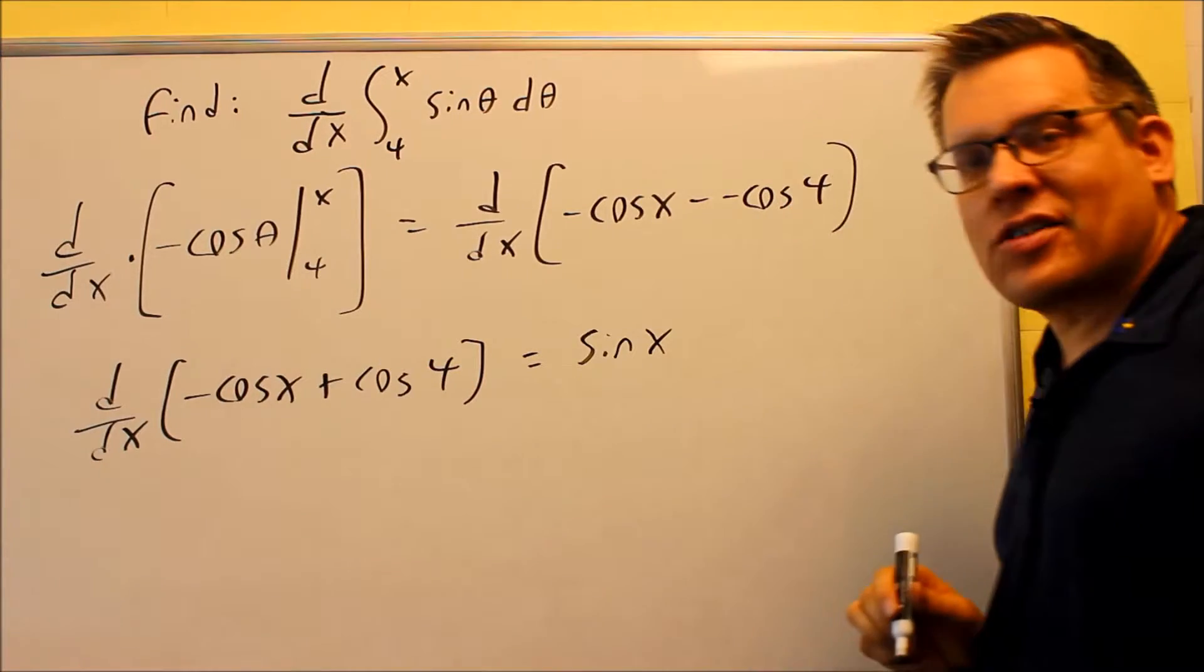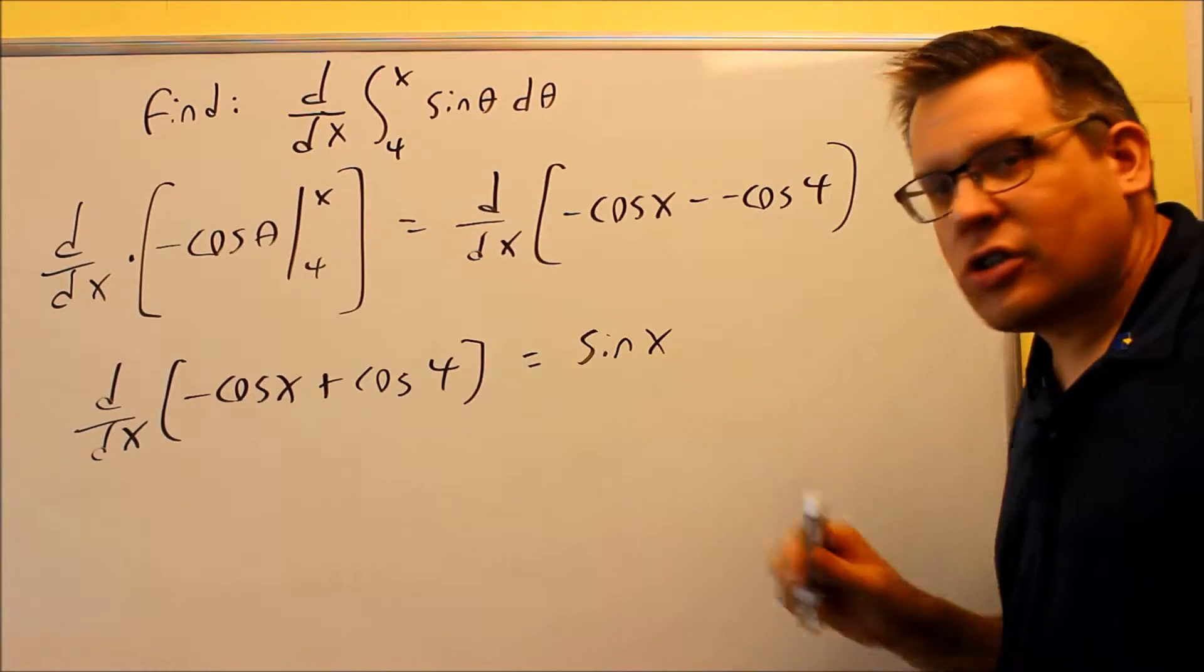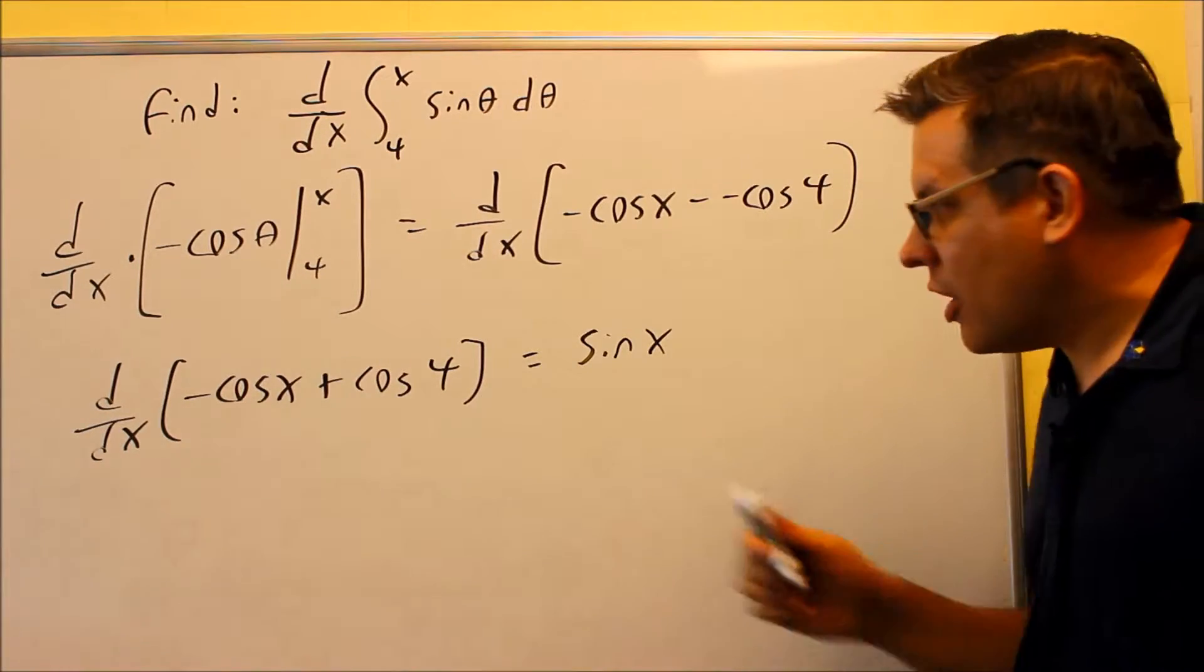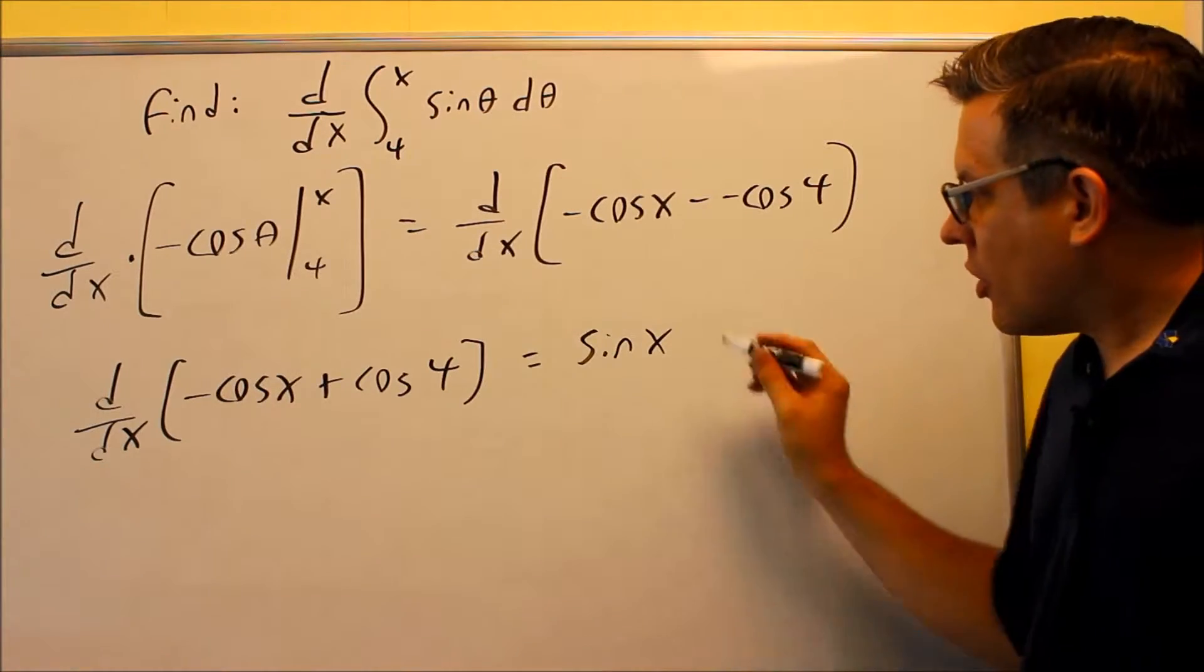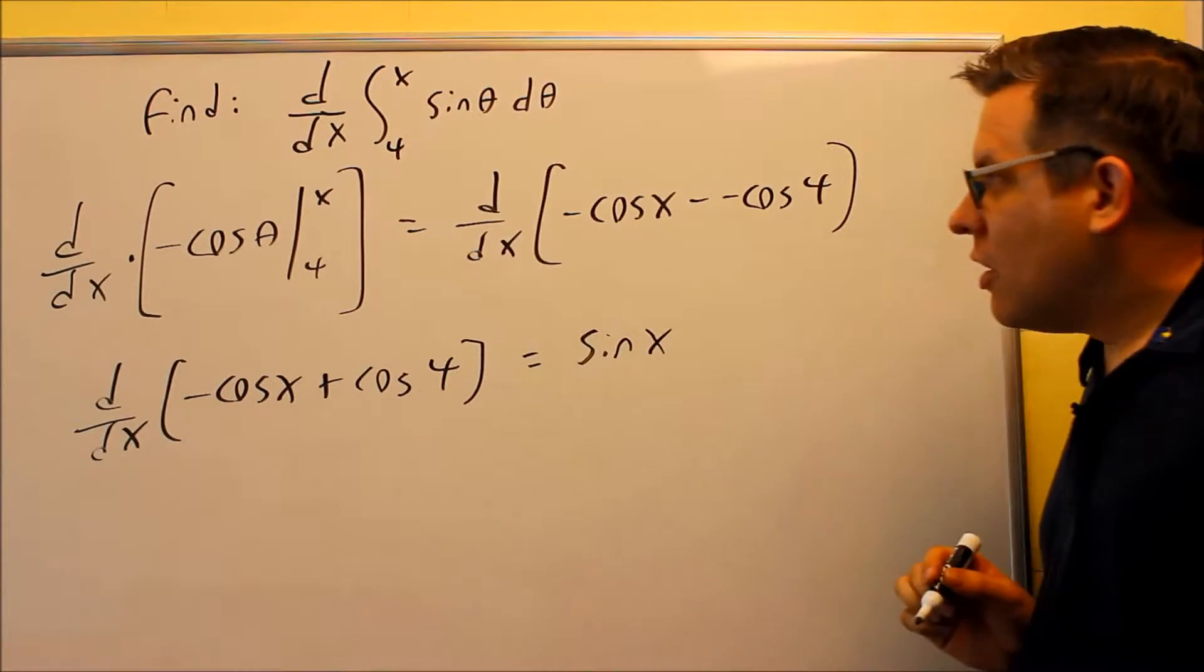Now cosine of 4, that's actually going to be a constant. You could put this into your calculator, you'll get a decimal answer and then the derivative of that is going to give you a zero, so therefore your answer is going to be sine x.